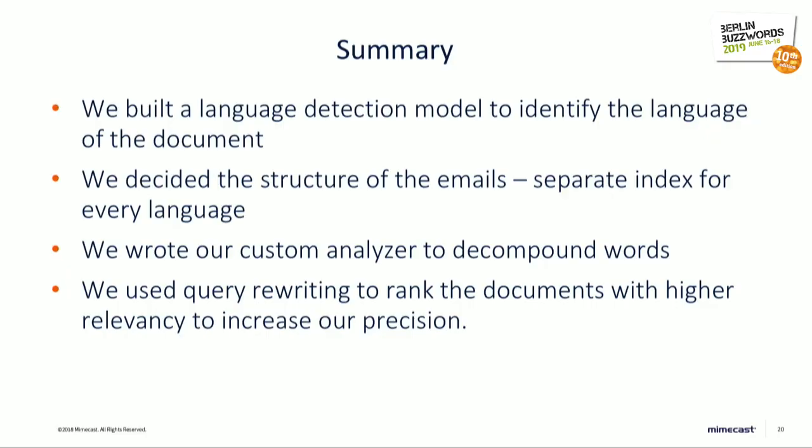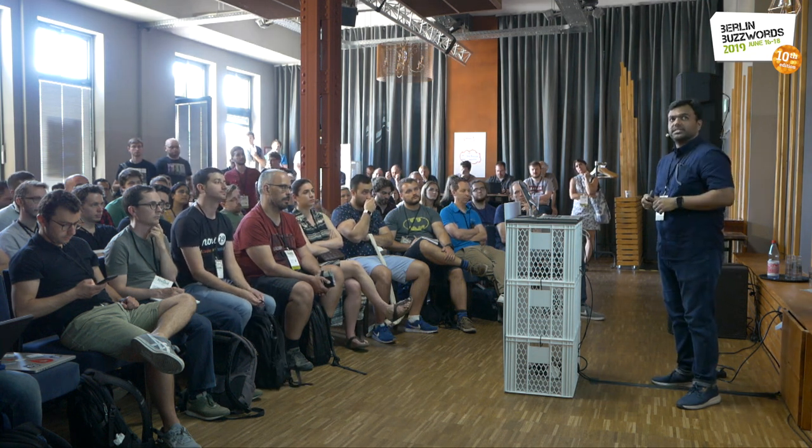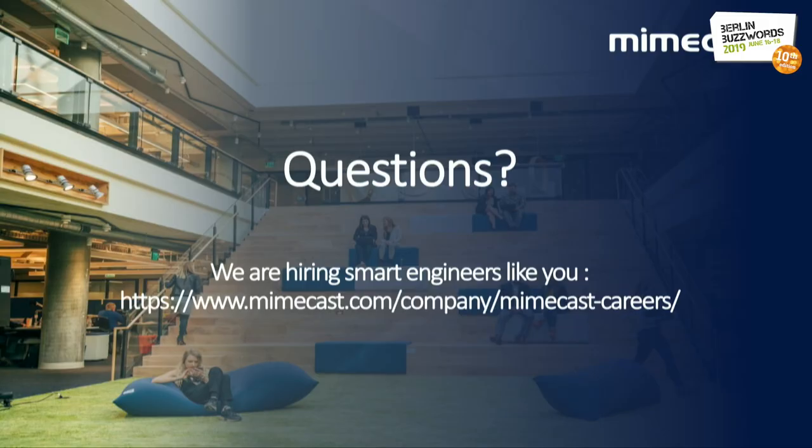In summary, we built a language detection model that scales to all languages — German and English were the most interesting due to compound words. We need a language detection model to identify which language a document belongs to, then decide on a storage structure — one index or separate indexes. For languages with compound words, we need an analyzer that correctly identifies and outputs subwords. And for relevance improvement, we can rewrite queries to boost the correct fields, ensuring better relevance and no loss of precision. We are also hiring smart engineers — please visit our careers page.